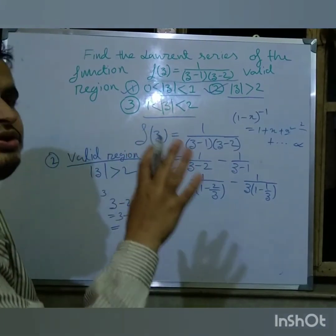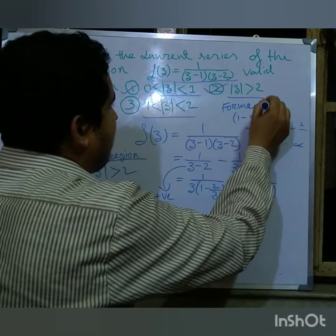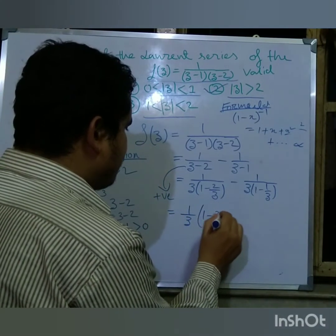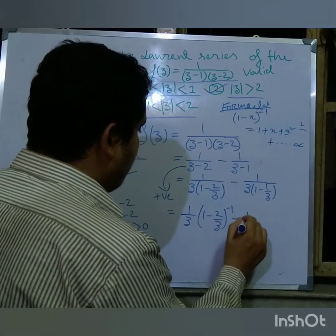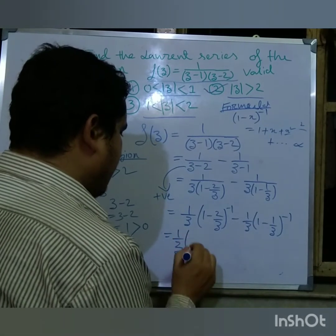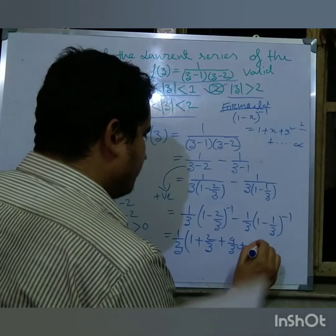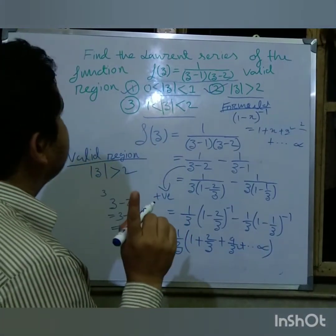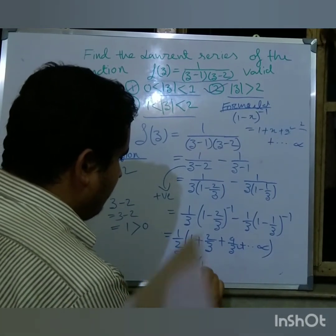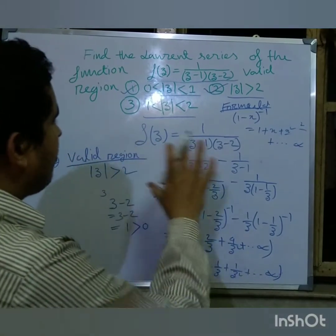Applying the binomial formula (1 minus x) inverse equals 1 plus x plus x squared up to infinity, I write: (1 minus 2/z) to the power minus 1 minus (1/z)(1 minus 1/z) to the power minus 1. This gives 1/z times (1 plus 2/z plus 4/z squared plus ...) minus 1/z squared minus 1/z cubed, up to infinity. This is my Laurent series for Region 2, |z| greater than 2.